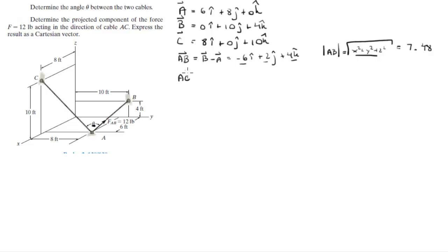Now AC is found by doing C minus A and it comes out to be 2i minus 8j plus 10k. And the magnitude of AC, which is found in the same manner, comes out to be 12.96.